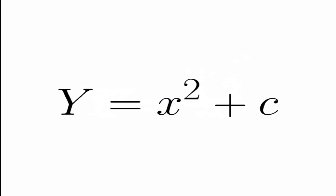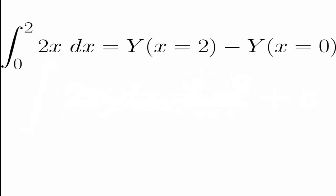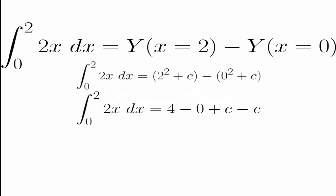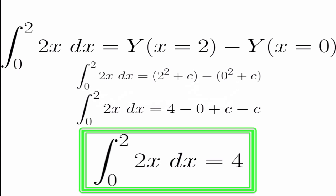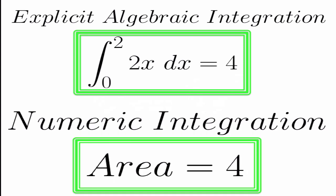Now, to show this is correct with respect to our other answer, we simply find the difference between y at x equals 2, and y at x equals 0. Therefore, we get the integral of 2x dx equals 2 squared plus c minus 0 squared plus c. This is equal to 4 plus c minus c, which is 4 plus 0, and that's 4. And as you can see, the answer to our explicit integration is exactly the same as the answer to our numerical integration.